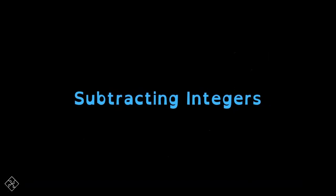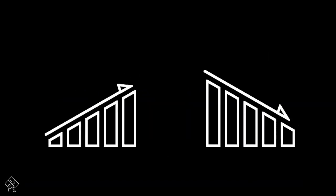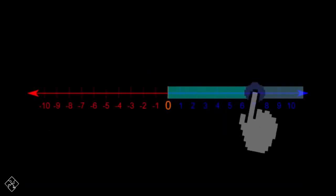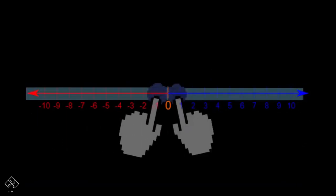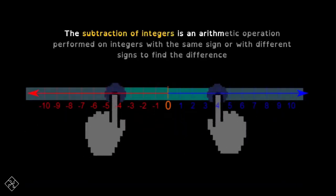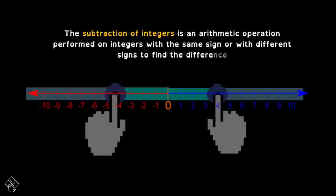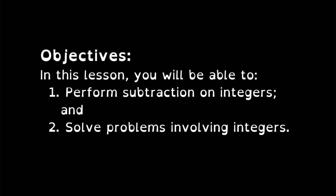Subtracting integers is the process of finding the difference between two integers. It may result in an increase or a decrease in value, depending on whether the integers are positive or negative or a mix. The subtraction of integers is an arithmetic operation performed on integers with the same sign or with different signs to find the difference. Let us learn more about subtracting integers in this video. You will be able to perform subtraction of integers and also solve problems involving integers.